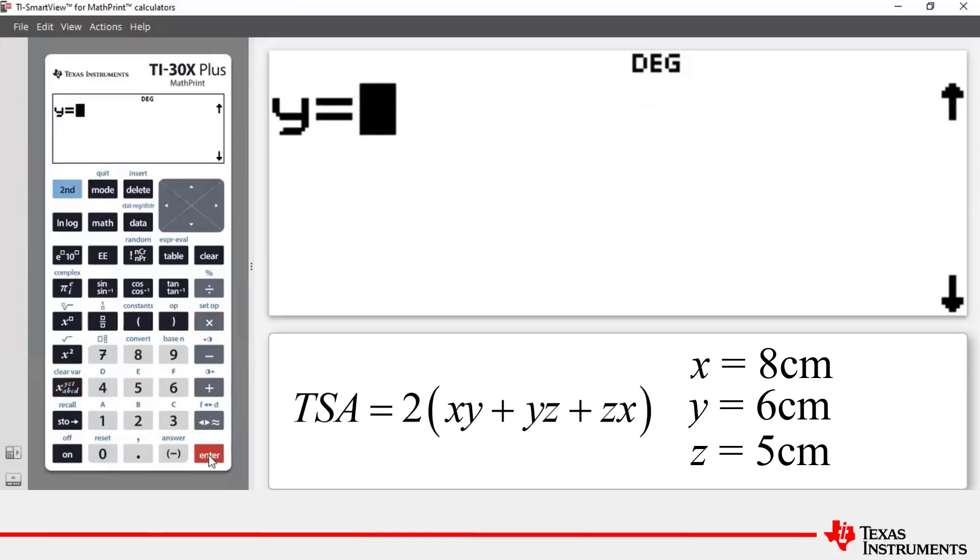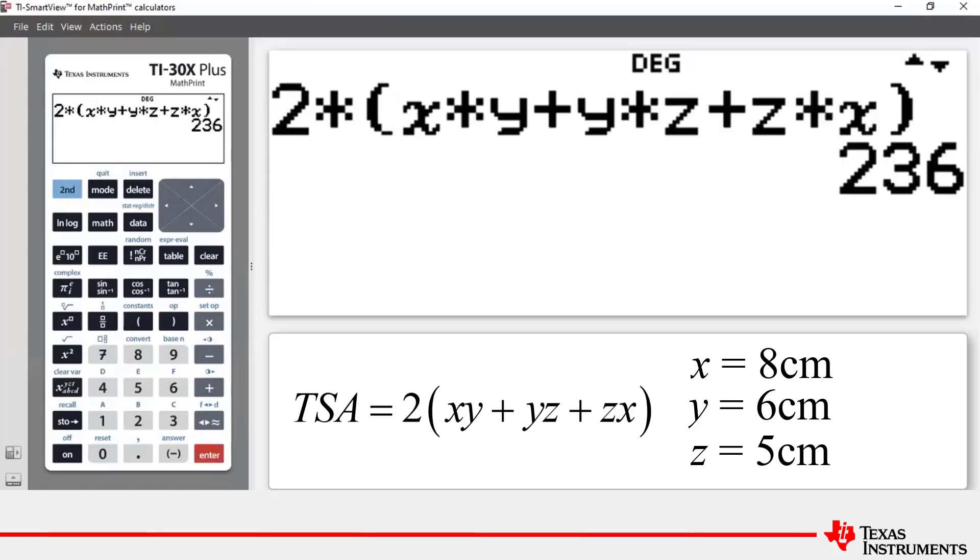For y we enter 6, press enter, and for z we press 5 and press enter. On the home screen what we get is the formula. The values for x, y, and z have been substituted in and the calculator has evaluated the total surface area for us and it's come out to be 236 centimeters squared.